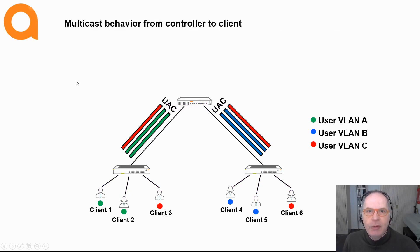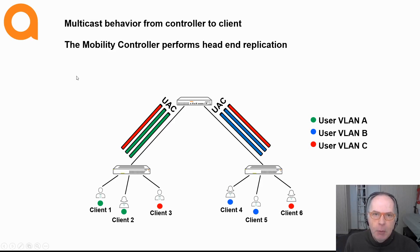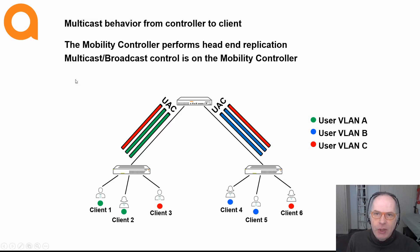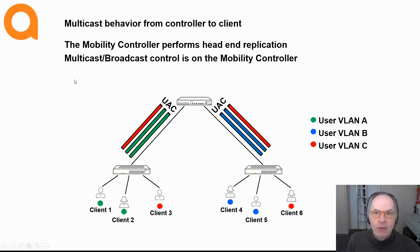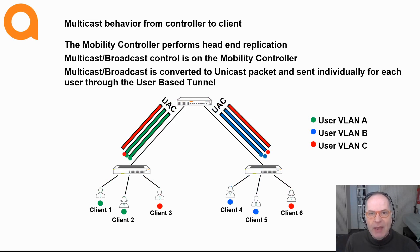The downstream traffic behavior is slightly different. When a multicast packet is received by the mobility controller, the mobility controller performs head-end replication. In other words, the mobility controller processes the packet and makes a change to it — it changes the destination MAC address, which is the MAC address of the client, from a multicast MAC address to a unicast MAC address of the client. The destination IP address remains unchanged. So normally in multicast environments the MAC address is derived from the multicast IP address, but with head-end replication the mobility controller changes that MAC address.